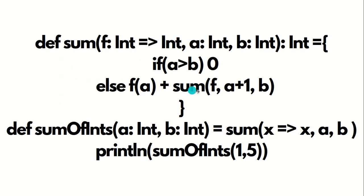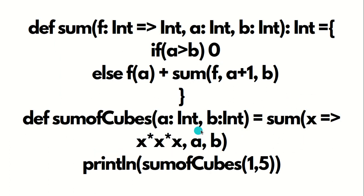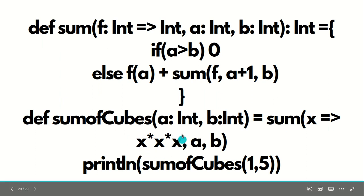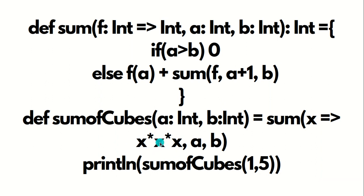Looking at the same summation example as before, the difference is that instead of passing a named helper function as the first parameter, we pass the expression directly — no name is used. For example, instead of sending 'cube' as the first parameter, we pass the inline expression directly. This is called an anonymous function. This marks the end of the video — thanks for watching, see you in the next one.